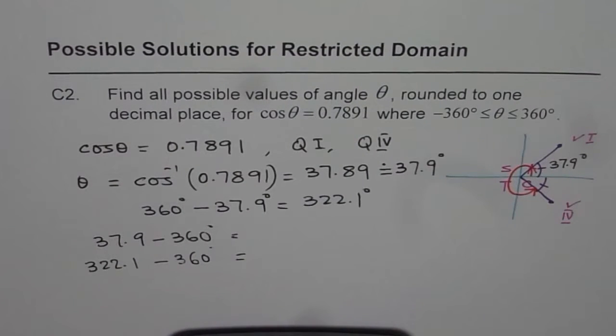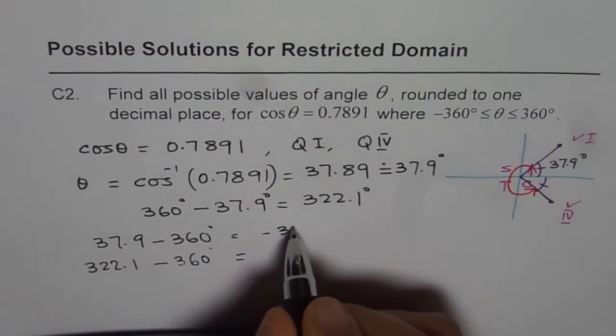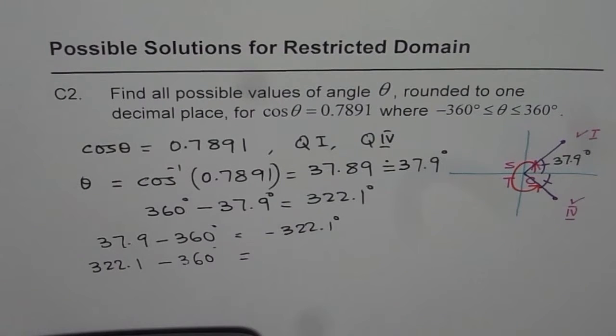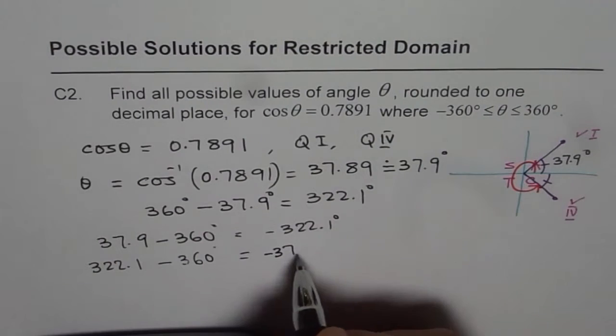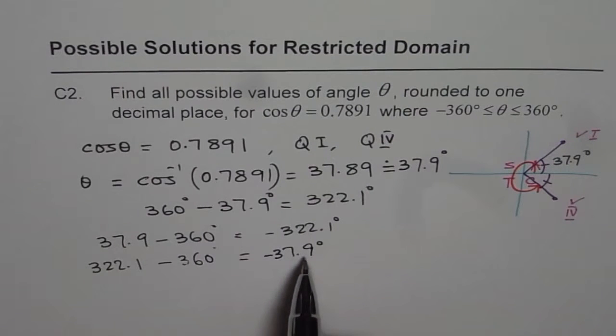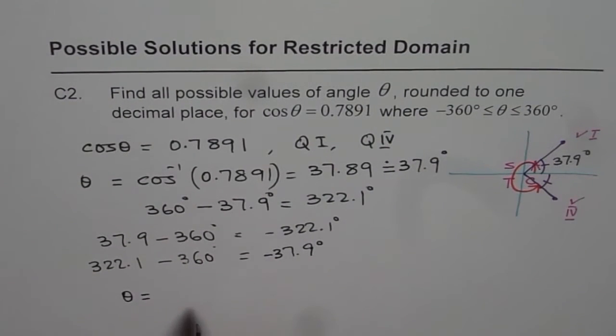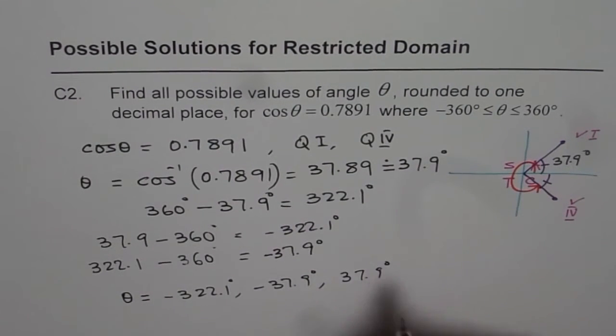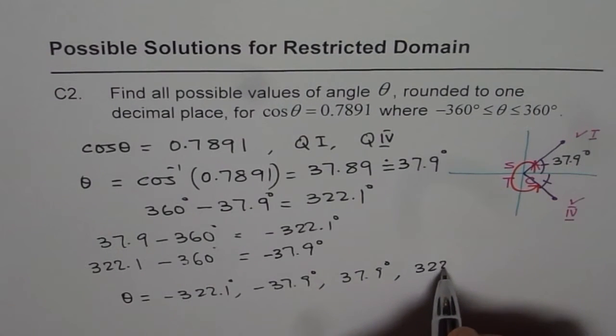So let us do it. We get 37.9 minus 360 equals to minus 322.1 degree. And 322.1 minus 360 degrees gives us minus 37.9 degrees. So these are the other two values. So now we can write down all four answers for theta.